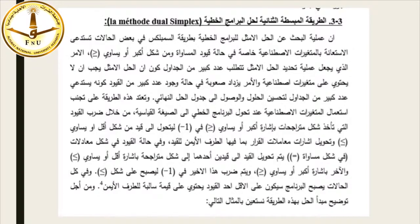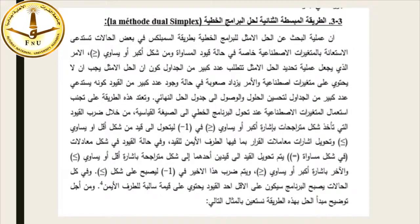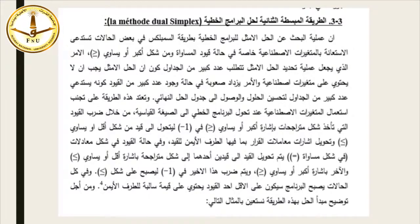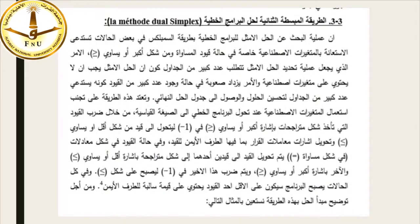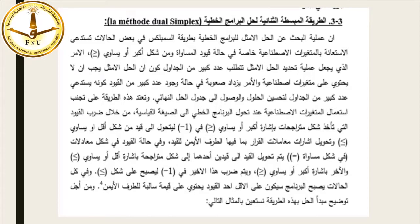تعتمد الطريقة الثنائية على تجنب استعمال المتغيرات الاصطناعية عند تحويل البرنامج الخطي إلى الصيغة القياسية، وذلك من خلال ضرب القيود التي تأخذ شكل متراجحات بإشارة أكبر من أو يساوي في سالب واحد لتتحول إلى قيود من شكل أقل من أو يساوي. وفي حالة القيود على شكل معادلات يتم تحويل القيد إلى قيدين أحدهما بإشارة أقل من أو يساوي والآخر بإشارة أكبر من أو يساوي مضروباً في سالب واحد.